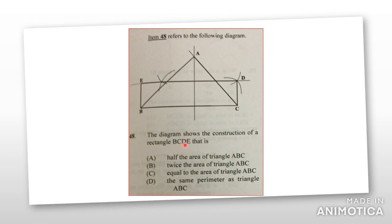the diagram shows the construction of a rectangle that is either half the area of the triangle, is it twice the area of the triangle, is it equal to the area of the triangle A, B, C, or is it the same perimeter as the triangle?